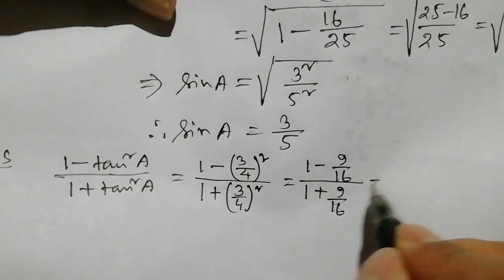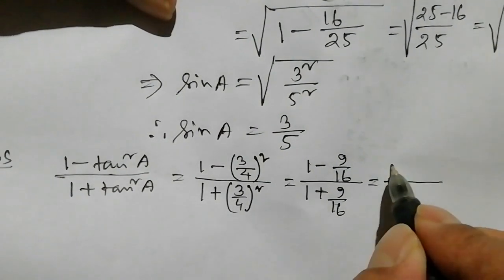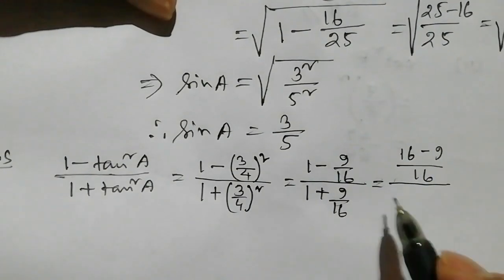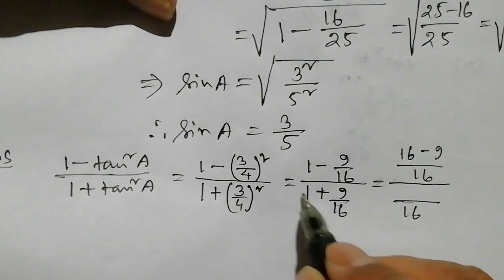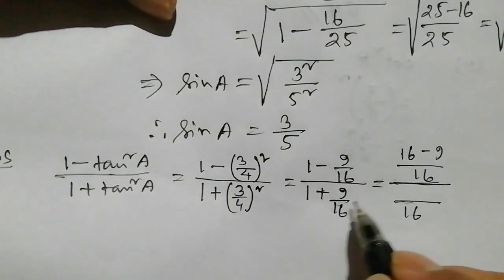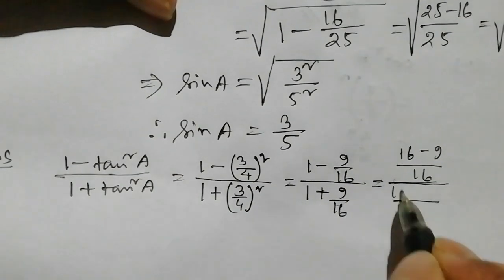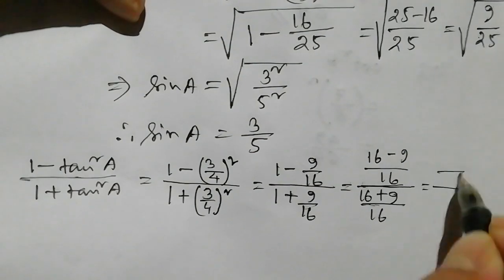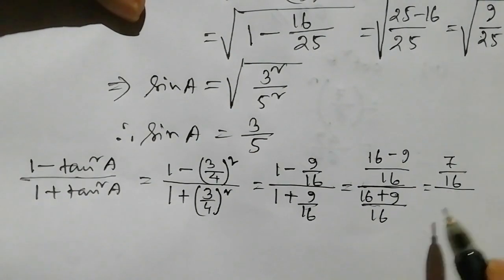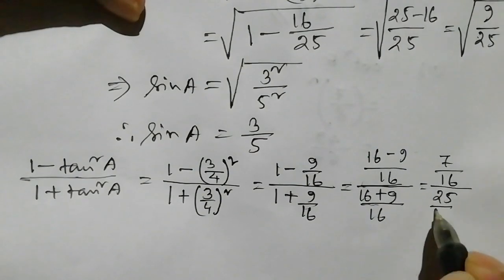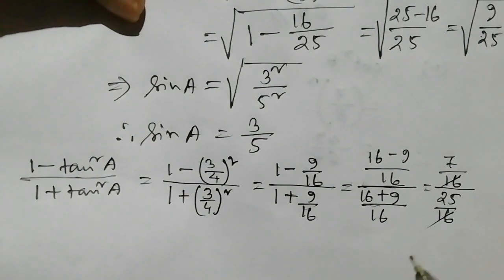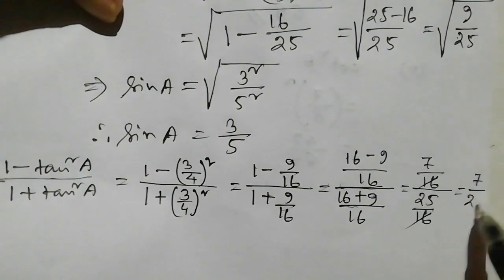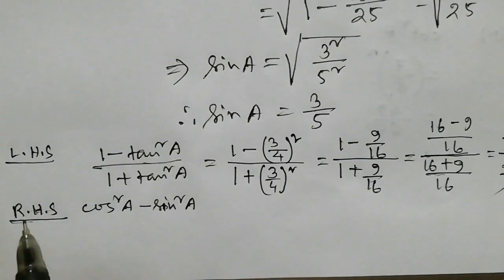Simplifying: 16 minus 9 divided by 16 plus 9 gives 7 divided by 25, so the LHS equals 7 by 25.